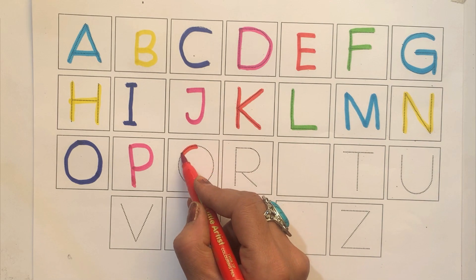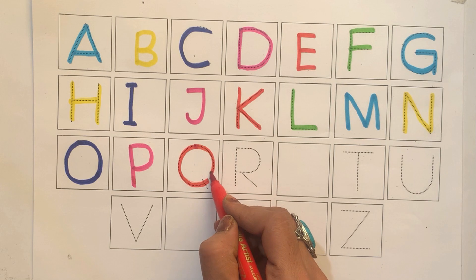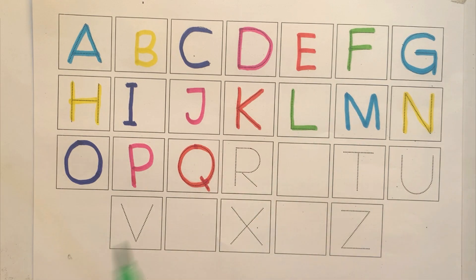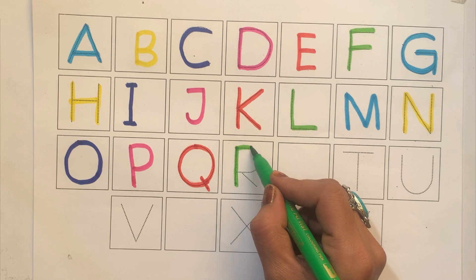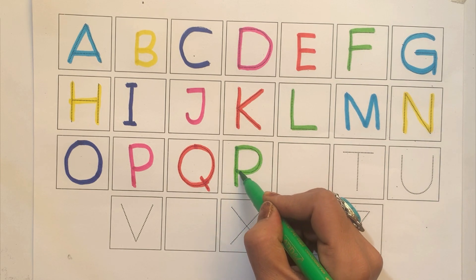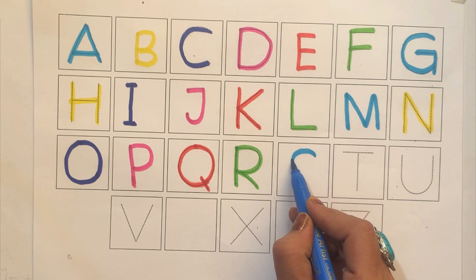Q. Q for queen. R. R for roach. S. S for sun.